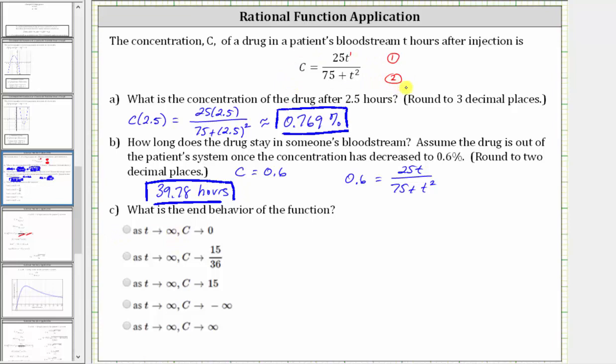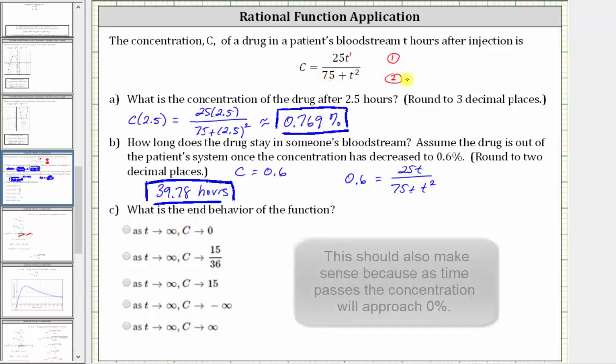And the concentrations get smaller and smaller and approach zero. Therefore, the end behavior is: as T approaches infinity, C approaches zero.